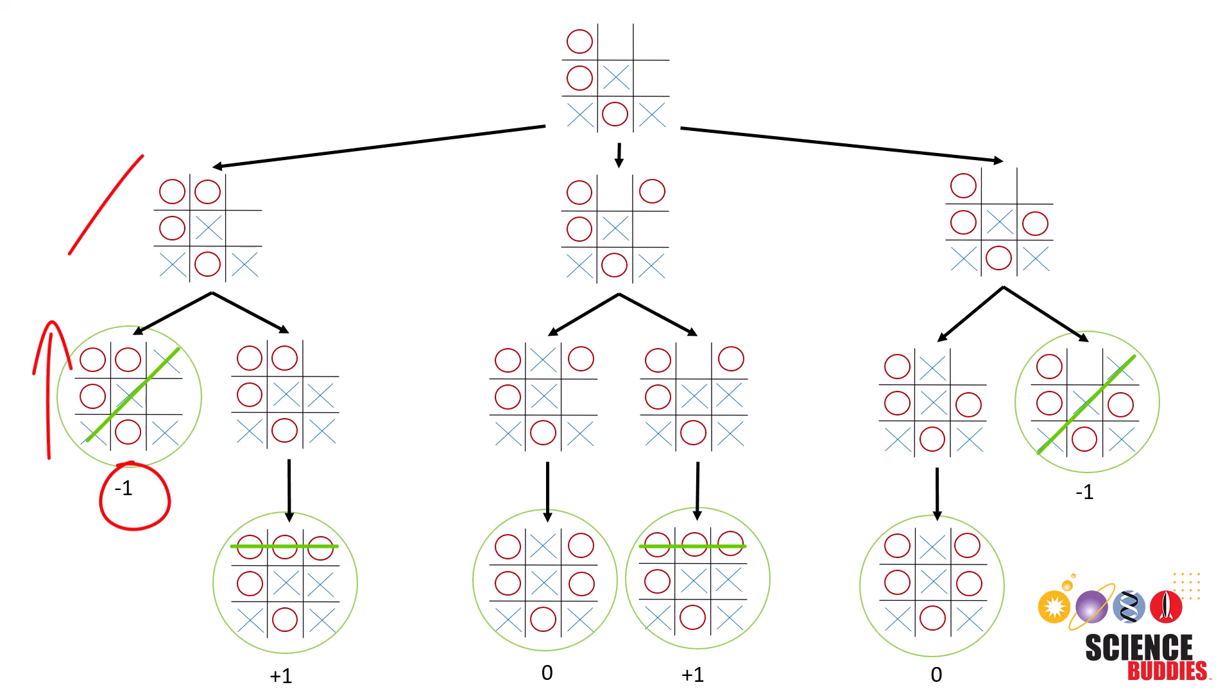As Minimax reaches the end of its exploration, it engages in a strategic backtracking maneuver. The algorithm starts to backtrack through the game tree, carrying with it the scores assigned to each node. As it descends, Minimax strategically chooses the path that leads to the optimal outcome for the player it represents.